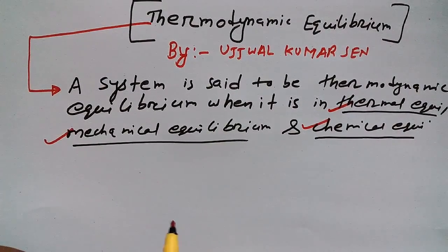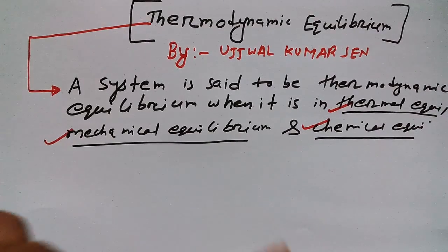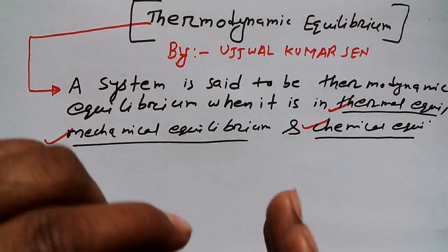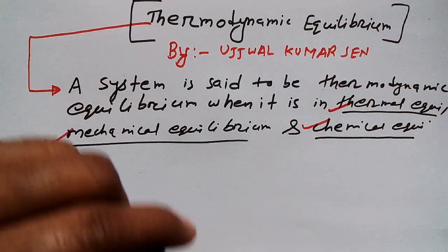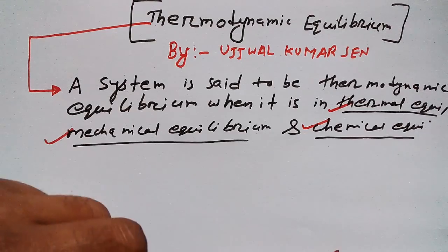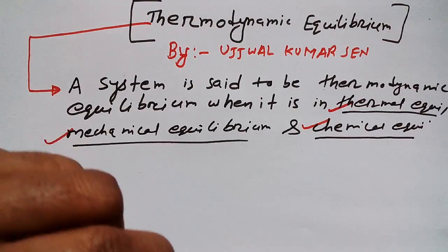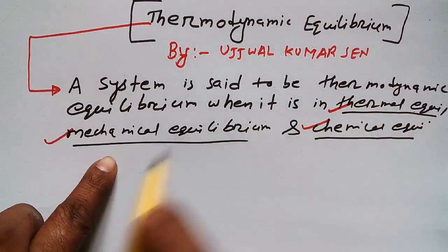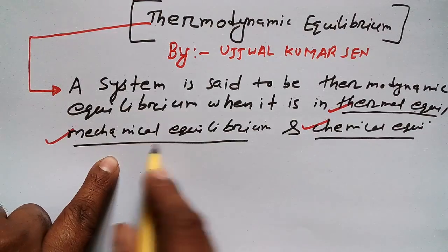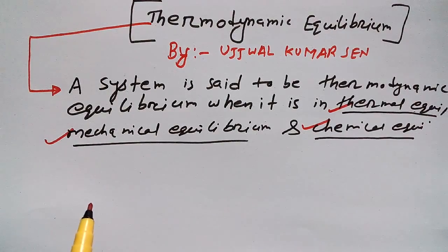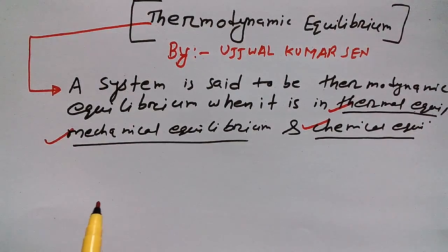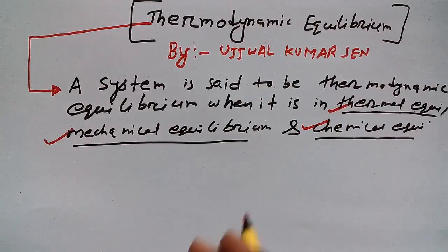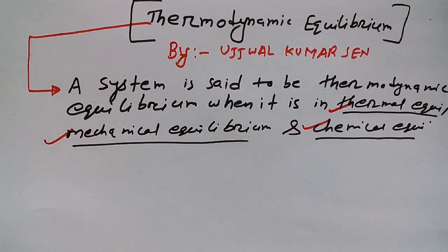In case of thermodynamic equilibrium there are three things, and those things need to be in equilibrium. What are those three things? Thermal equilibrium, mechanical equilibrium, and chemical equilibrium — all these things must also be in equilibrium.